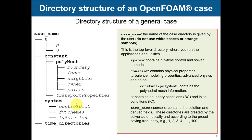In system you have all the runtime control and solver numerics: discretization order, time-saving frequency, accuracy settings, and so on. The key files are controlDict, fvSchemes, and fvSolution. This organization is fixed — the names and locations do not change. For example, controlDict is always in system; if it's missing, OpenFOAM will give a fatal error. After running, you'll get numbered time directories (e.g., 1, 2, 3, 4) or iteration numbers containing the solution fields.